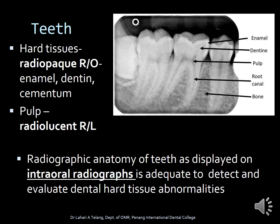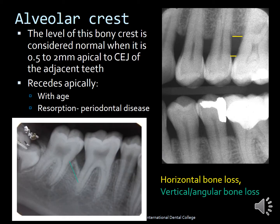The radiographic anatomy of teeth as displayed on intraoral radiographs is adequate to detect and evaluate dental hard tissue abnormalities. For the simplest forms like dental caries, the intraoral radiograph is more than enough to distinguish whether the patient has caries or not. Moving on to the alveolar crest — the height of the crestal bone is what is called the alveolar crest. It is considered normal when it is about 0.5 to 2 mm apical to the CEJ of adjacent teeth. This radiograph shows the yellow mark indicating the CEJ, which is a perfect example of bone loss — specifically horizontal bone loss.